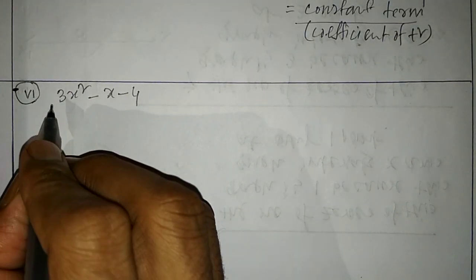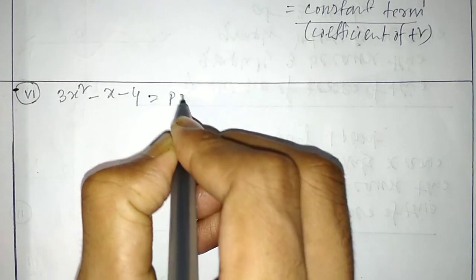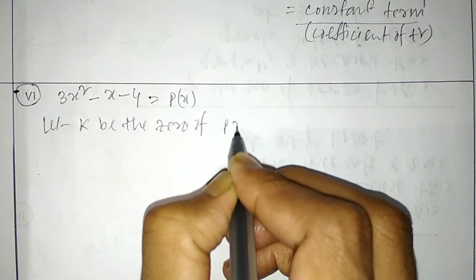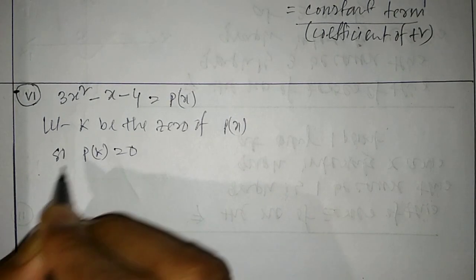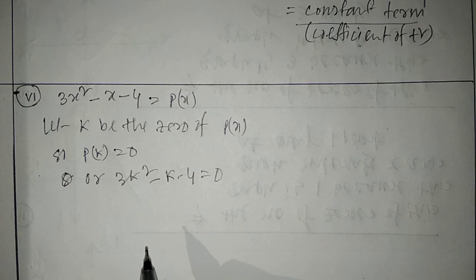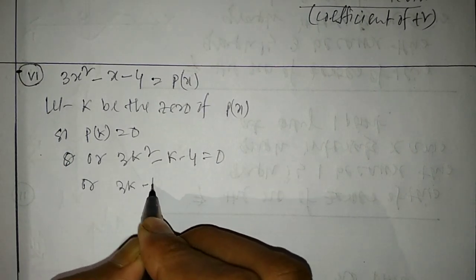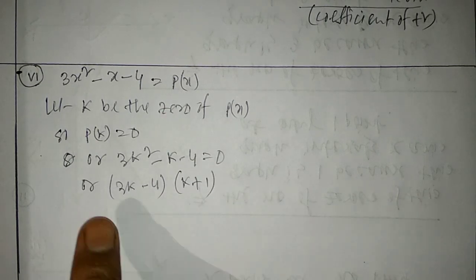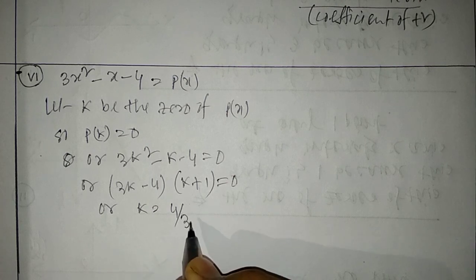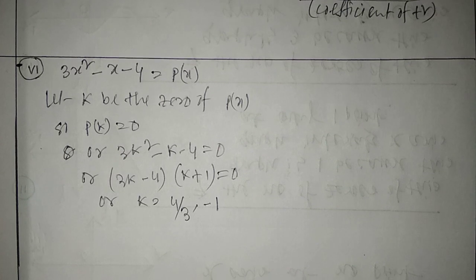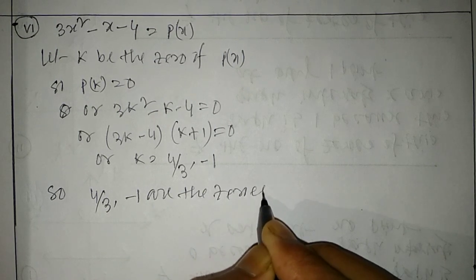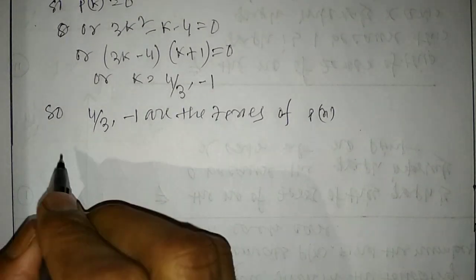This is question number 6: 3x² - x - 4 = p(x). Let k be the zero of p(x), so p(k) = 0. That gives 3k² - k - 4 = 0, or 3k² + 3k - 4k - 4 = 0, giving k = 4/3 or k = -1. So 4/3 and -1 are the zeros of p(x).